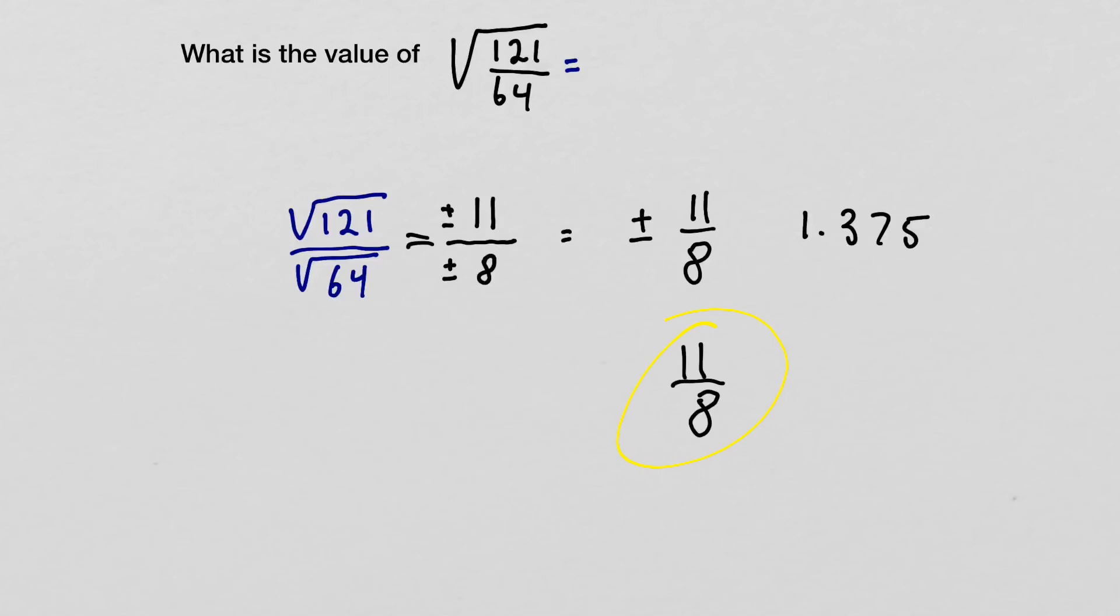To recap, the important point is that we took this fraction, the square root of 121/64, and split it up. We took the square root of 121 and the square root of 64 separately and solved them.